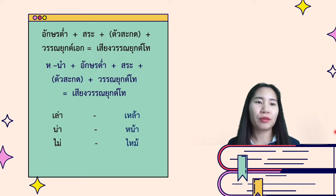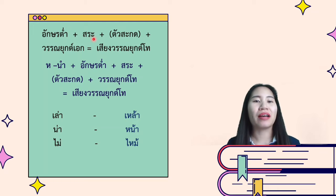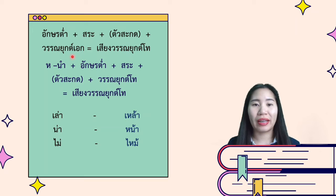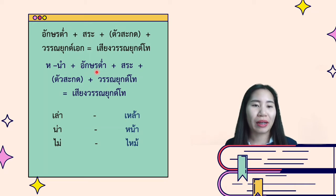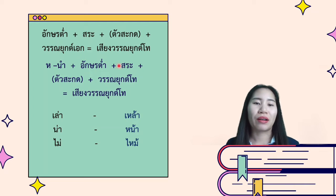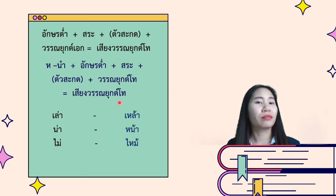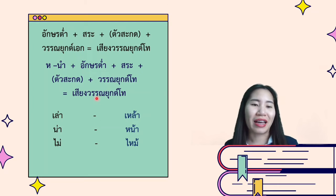Now let's move to the next type. อักษรต่ำ stays with a vowel and final consonant with วรรณยุกต์เอก (tone mark 1), and the tone you get is falling tone. This type pairs the sound with หอนำ — หอหีบ นำ combined with อักษรต่ำ, staying with tone mark 2. The tone that you get is also falling tone.